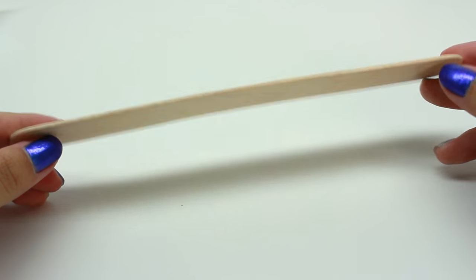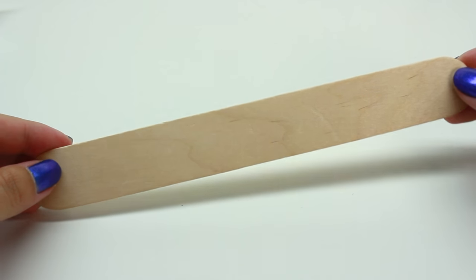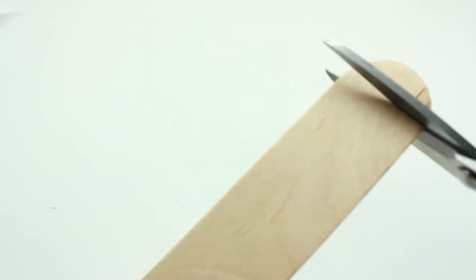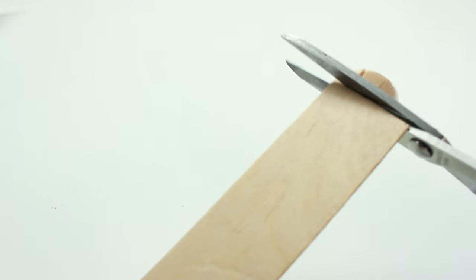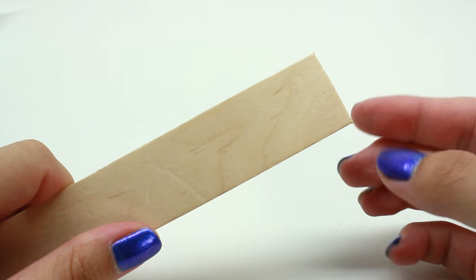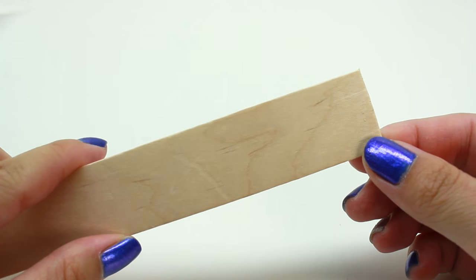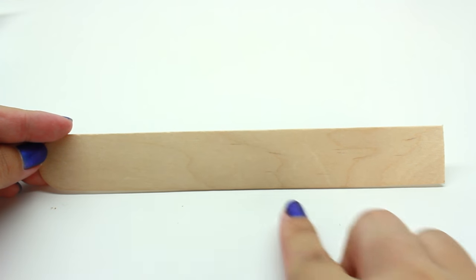Cut off the side where it's round, and then go ahead and cut the middle so you should have two of these.